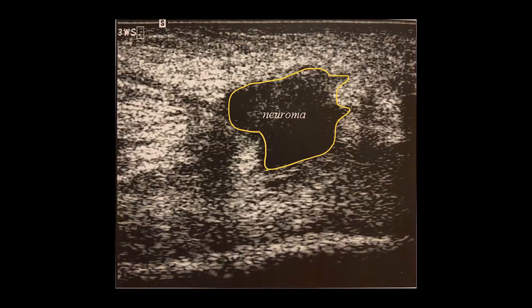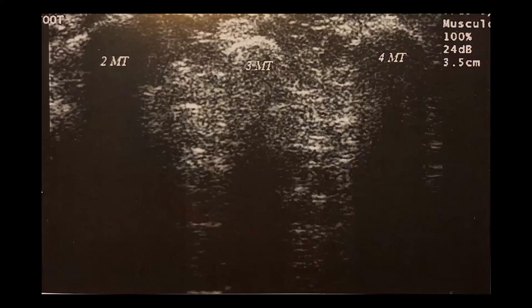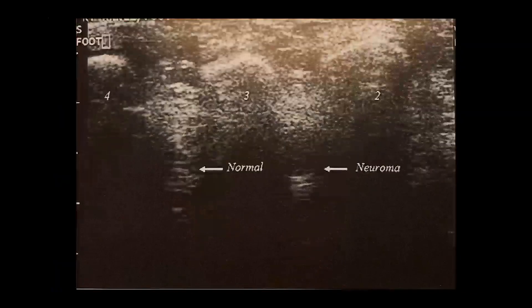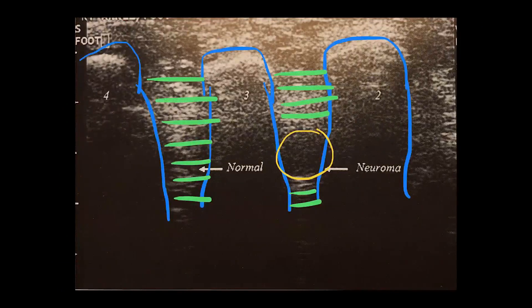As opposed to the transverse image, the neuroma on a longitudinal image will appear larger. Here is a normal picture of a transverse appearance of the forefoot at the level of the metatarsal heads. The metatarsals seen in cross-section demonstrate a curvilinear echogenic interface with posterior acoustic shadowing. The intermetatarsal web spaces are normally uniformly hyperechoic because they normally contain only fat, intradigital nerves, and small vessels. This image demonstrates a normal third web space as well as a second web space with a neuroma. Note that the hyperechoic fat is replaced with a round, well-defined hypoechoic mass. The metatarsals appear normal in this image.